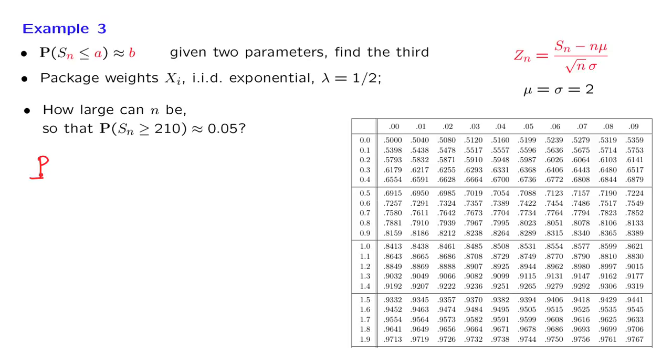So we proceed, as usual, by taking this event and rewriting it in a way that involves the standardized version of Sn. So we need to subtract n times mu, which in this problem is 2 times n. We subtract it from both sides of the inequality, and then we divide by the square root of n times sigma, which is 2. So we divide both sides of the inequality by this number.